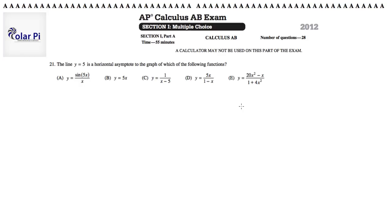you have that y equals a is a horizontal asymptote if the limit as x goes to infinity or negative infinity of the function f of x or y is going to equal a.